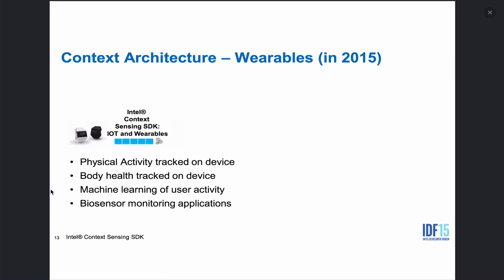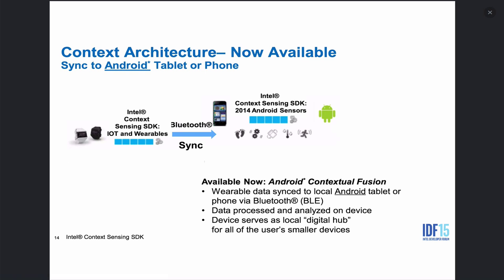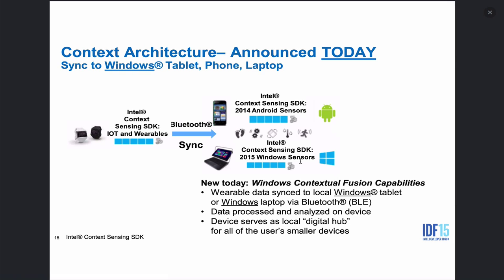Another example of how we're getting information into the system that's valuable to developers is getting physical activity off of wearable devices. We have an SDK that allows wearable sensors to sync information into a tablet or phone via Bluetooth, and our SDK is capable of supporting this on Android today and can serve as a digital hub. What we're releasing today is our Windows SDK that also can sync information from wearables and can provide a multi-platform scenario for contextual information.